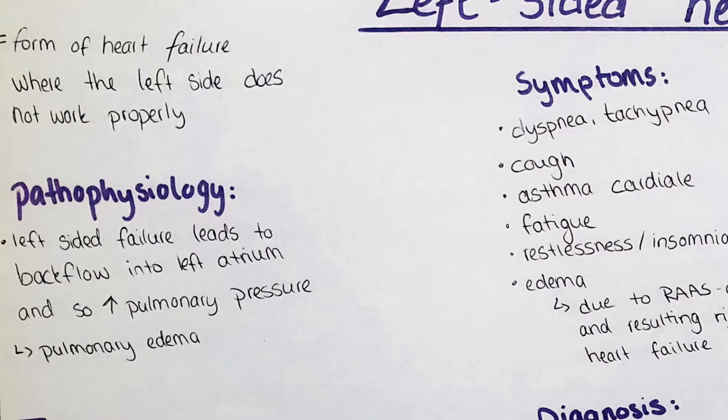Left-sided heart failure is a form of heart failure that is due to some defect or pathology within the left side of the heart. To understand the pathogenesis of left-sided heart failure we first have to know the basic anatomy of the heart with the blood circulation.